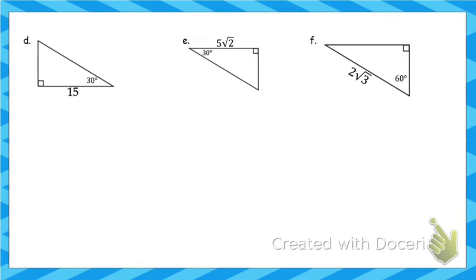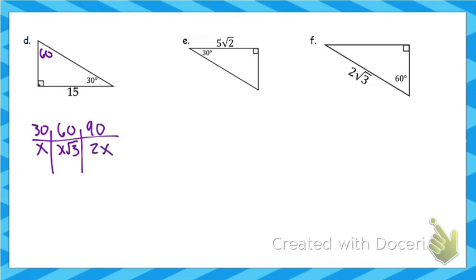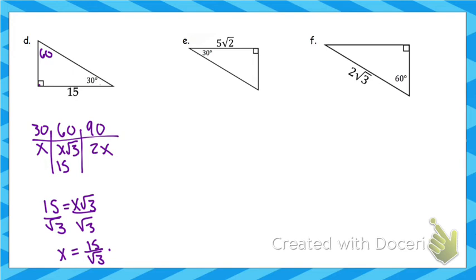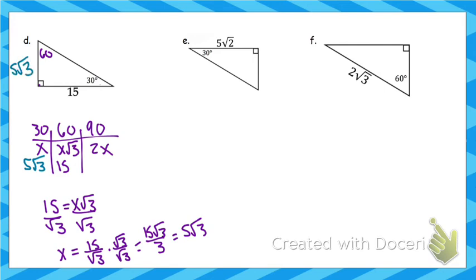Now the harder algebra ones. This is a 30-60-90: ratio x, x√3, 2x. Since 15 is across from 60, we set x√3 equal to 15 and divide by √3. Rationalizing by multiplying top and bottom by √3 gives 15√3 over 3, which simplifies to 5√3. So x equals 5√3. Across from 30 is 5√3, and across from 90 is 2 times 5√3, which is 10√3.